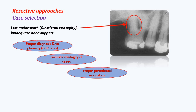For example, don't perform a resective approach for an upper third molar that is tilted and needs extraction, or a resective approach on a lower third molar that has no opposing tooth and whose neighboring teeth are missing. Always think about the functional strategic value of the tooth.